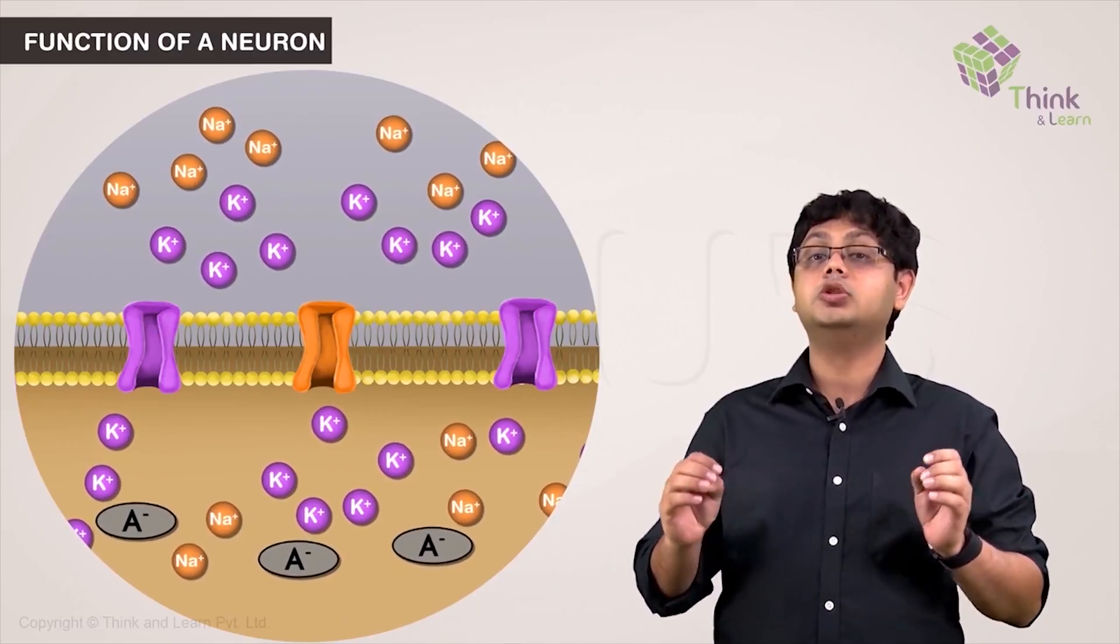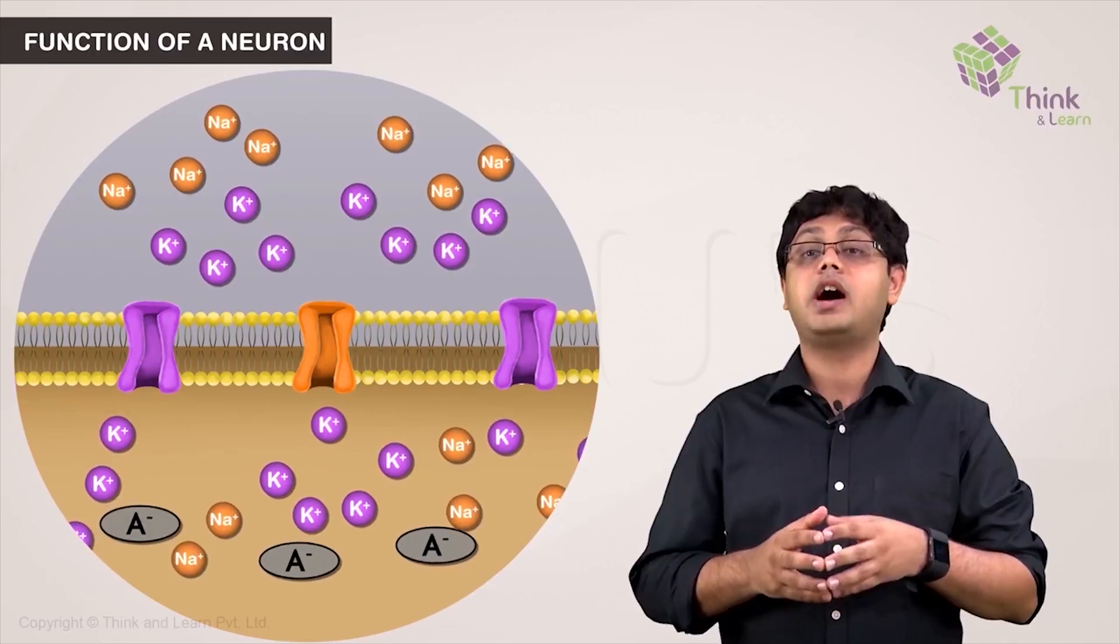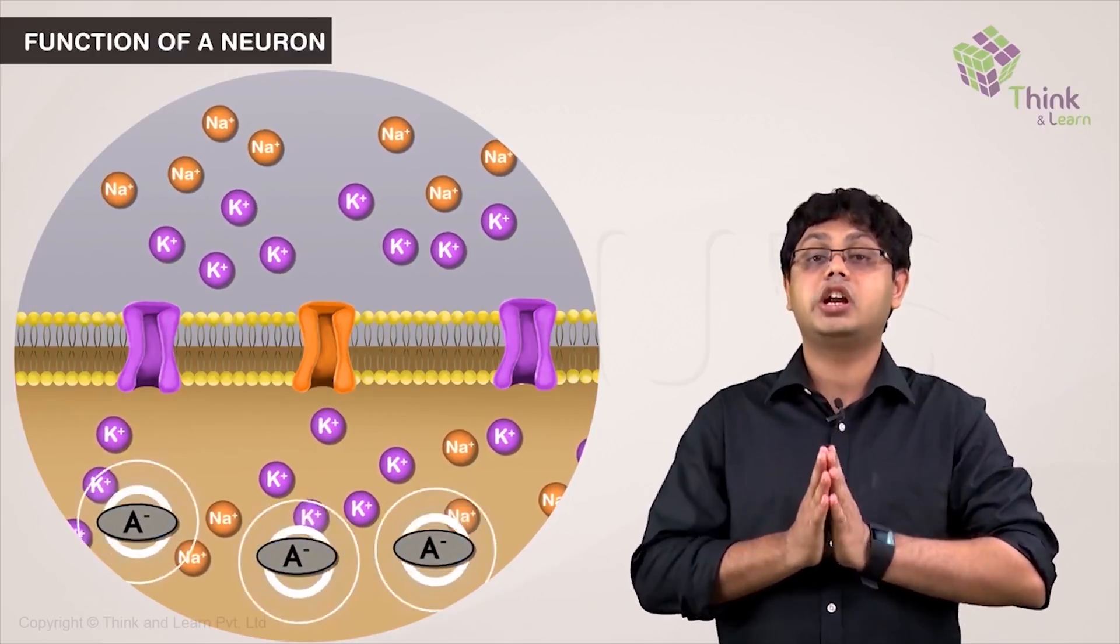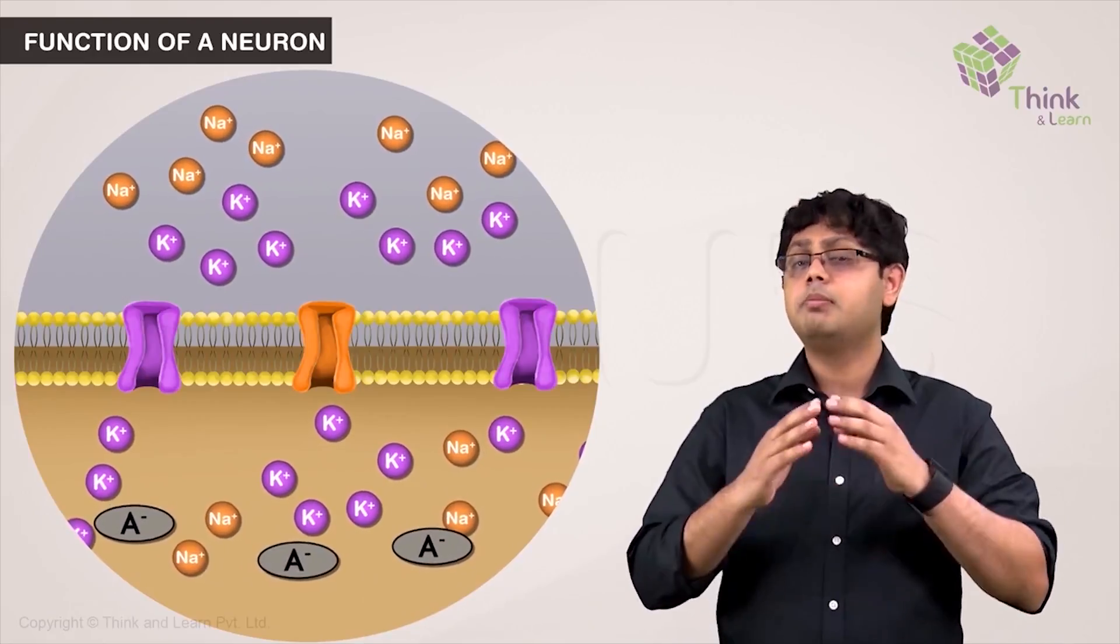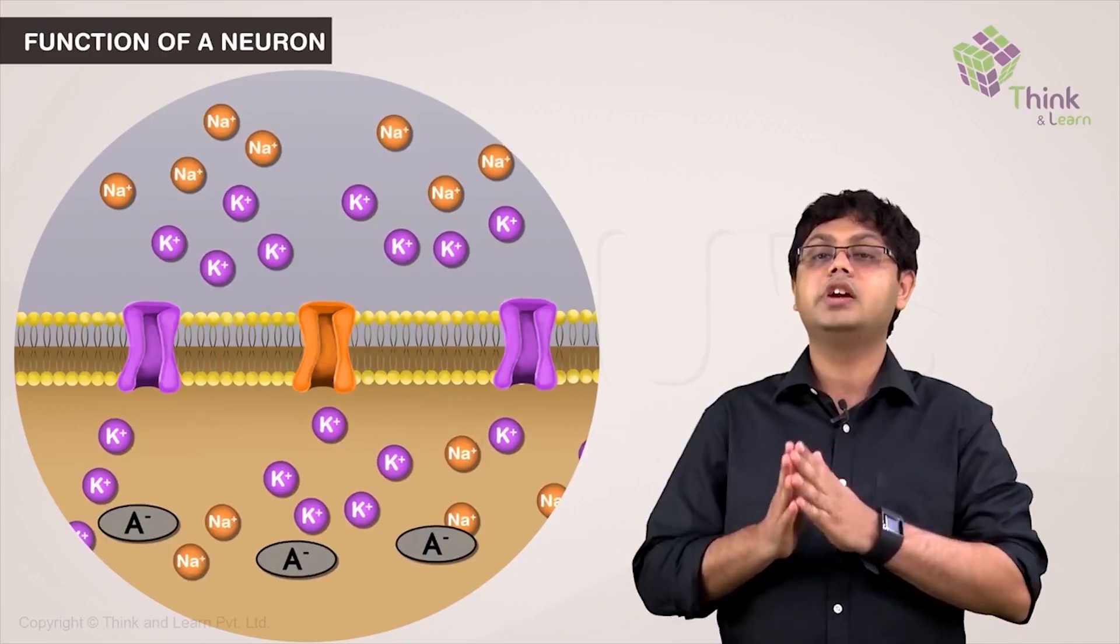Although potassium was high inside the cell, the cell was in a state of electrical neutrality. However, by leaving the cell, the main positive ions inside exit the cell, leaving more negative charges behind. This is because proteins are abundant inside the cell and are negative in charge.